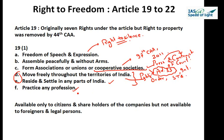The last freedom is the freedom of trade and occupation. It guarantees all citizens the right to choose any profession, occupation, trade, or business. This right is restricted by the state under Clause 6, which includes imposing reasonable restrictions in the interest of the general public or prescribing professional or technical qualifications necessary for carrying out any profession, trade, or business. These Article 19 rights are available only to citizens and shareholders of companies, not to foreigners or legal persons.